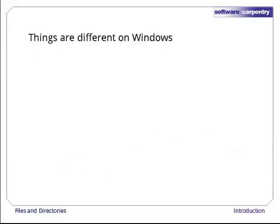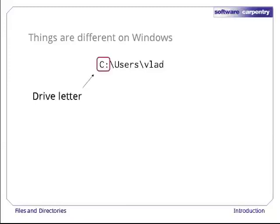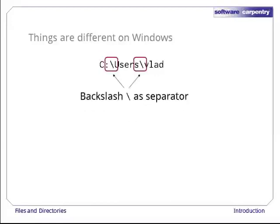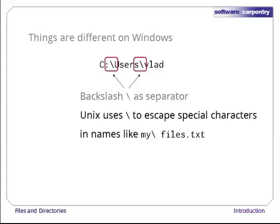Everything we have seen so far works on Unix and its descendants, such as Linux and Mac OS X. Things are a bit different on Windows. Here's a typical directory path on a Windows 7 machine. The first part, C:, is a drive letter. This notation dates back to the days of floppy drives, and even today, each drive is a completely separate file system. Instead of a forward slash, Windows uses backslash to separate the names in a path.